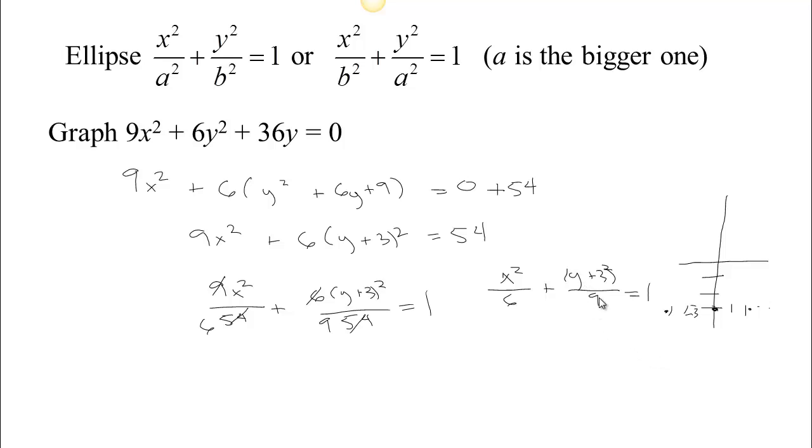The y value, because this is a 9, the bigger, a squared is 9. So we have a equals 3. So we can go 1, 2, 3 above and 1, 2, 3 below that point. And those are the ends of the long axis, the major axis. So we can sketch a little box here. And the ellipse just fits inside the box.